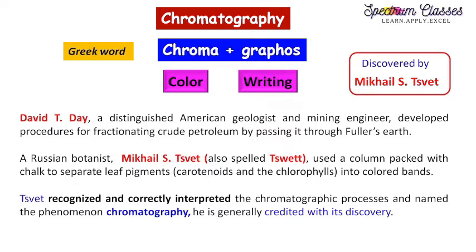There was a scientist David T. Day, who was a distinguished American geologist and mining engineer. He developed a procedure for fractionating crude petroleum by passing it through fuller's earth. At the same time, a Russian botanist M.S. Tswett used a column packed with chalk — meaning calcium carbonate — to separate leaf pigments, i.e., carotenoids and chlorophylls, into colored bands.